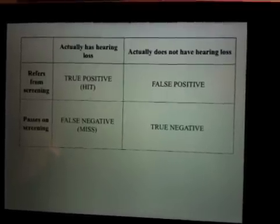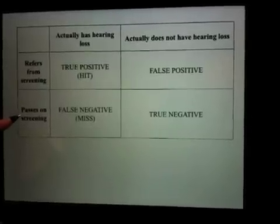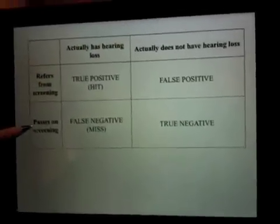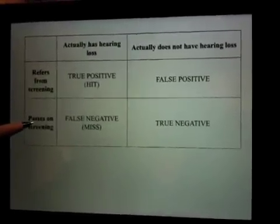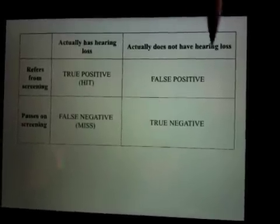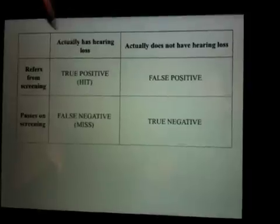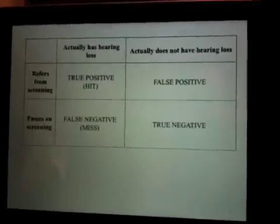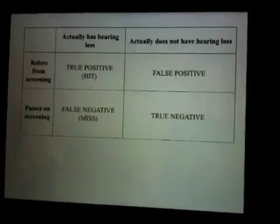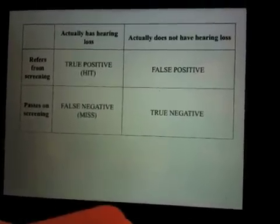If an individual actually does not have a hearing loss and they pass on the screening, we call that a true negative — the results from the screening were suggestive of no hearing loss or no need for further testing, and the individual did not have a hearing loss. If an individual actually does have a hearing loss yet they still pass on the screening, we call that a false negative. We have missed that person — they do have a hearing loss, but the screening measure did not identify them for further testing.